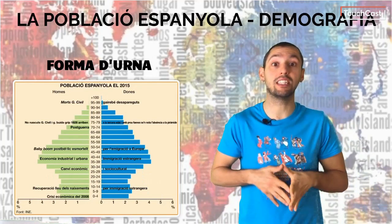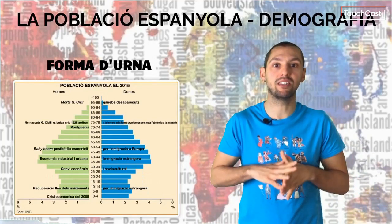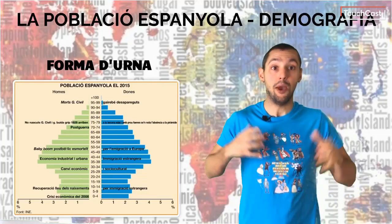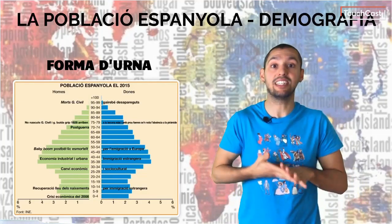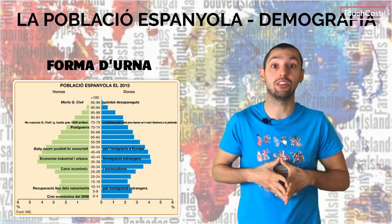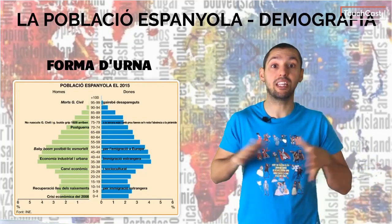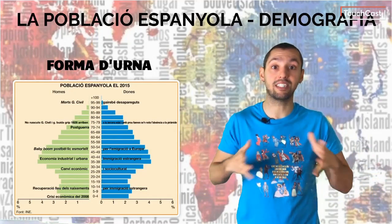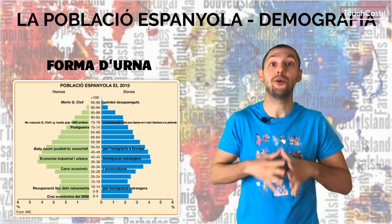La forma d'urna indica que es tracta d'una societat fortament envellida, amb menys d'un 25% de joves i més d'un 12% d'ancians. Per conseqüent, la base és estreta a causa de la baixa natalitat i en una clara regressió. La gent major augmenta per l'increment de l'esperança de vida. S'han d'explicar les causes i les conseqüències de l'envelliment, quant a factors com ara la despesa social.